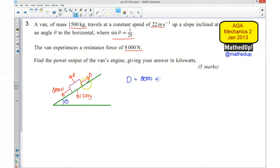plus the component of the weight acting parallel to the slope. That's 1500g sine theta. That's the component of this force acting in this direction. That's what my driving force equals.